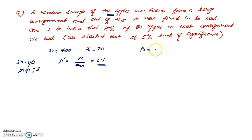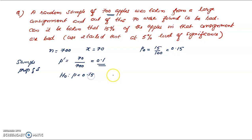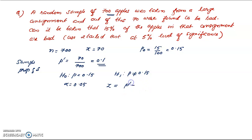The population proportion of success p0 is 15% — that is, 15/100 equal to 0.15. We test H0: p equal to 0.15 against H1: p not equal to 0.15. We fix alpha equal to 0.05. The test statistic is Z equal to p-dash minus p0 divided by root of (p0*q0 divided by n).